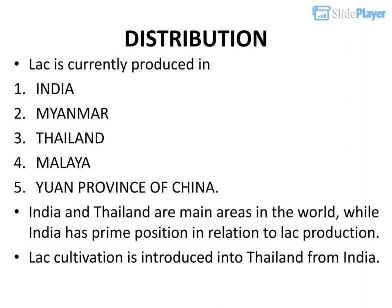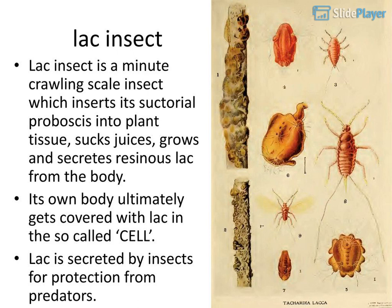LAK is currently produced in India, Myanmar, Thailand, Malaya, and the Yuan Province of China. India and Thailand are the main producing areas in the world, while India holds the prime position in relation to LAK production. LAK cultivation was introduced into Thailand from India.